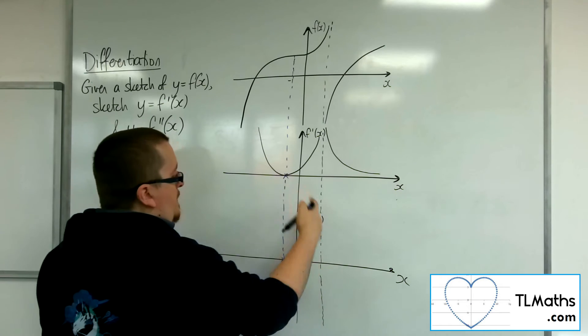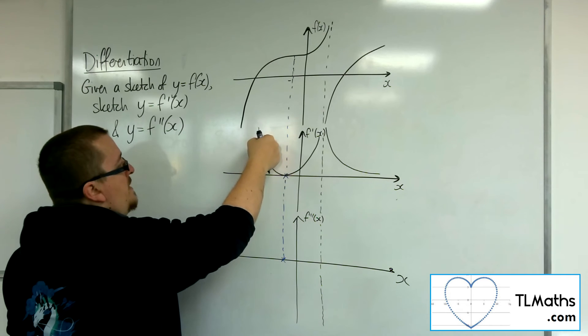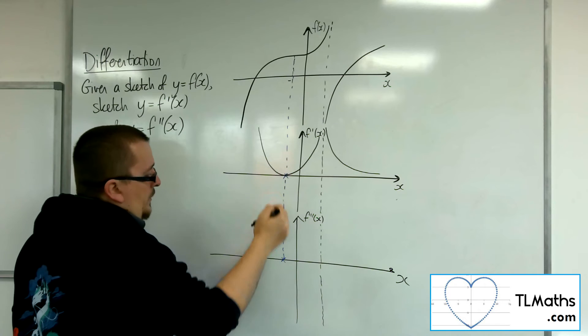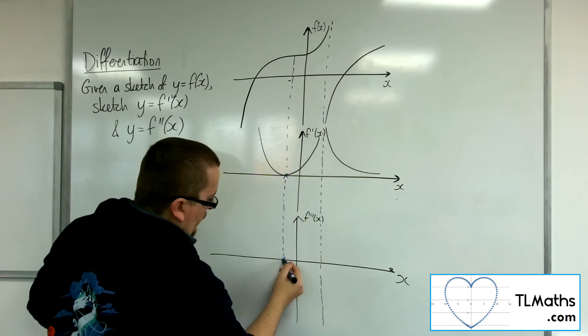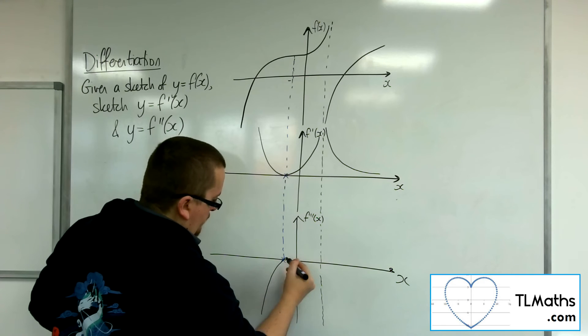So then let's have a look at to the left of that point. So we've got a negative gradient coming down. So we're in the negative region coming towards that point on the x-axis.